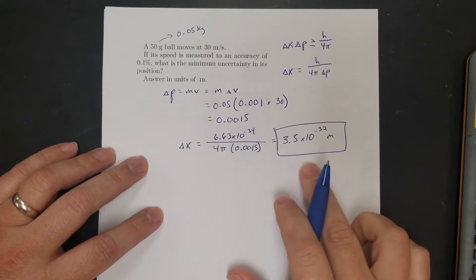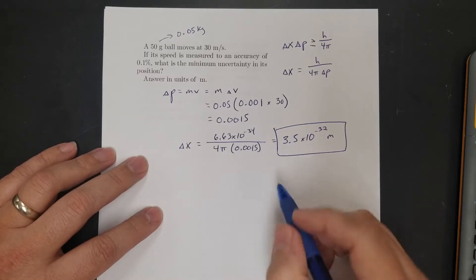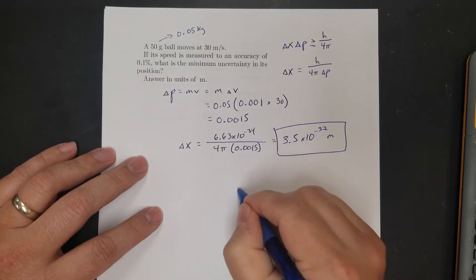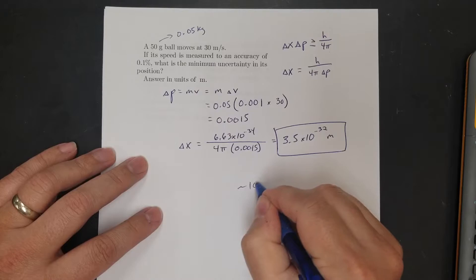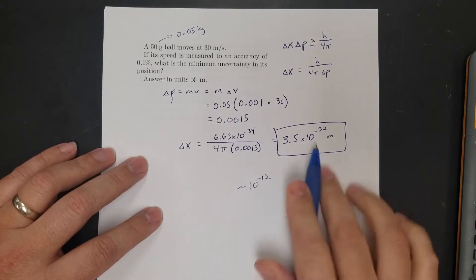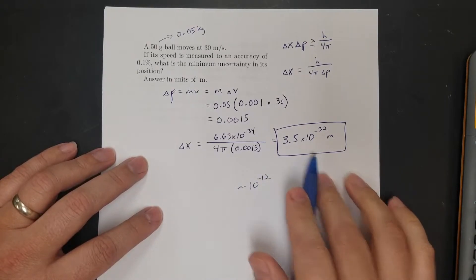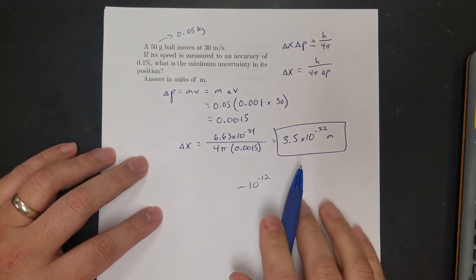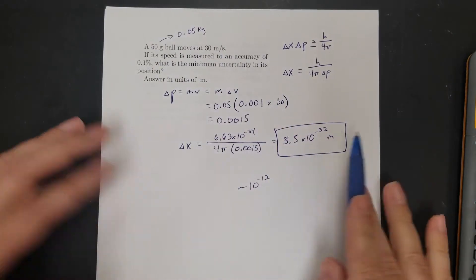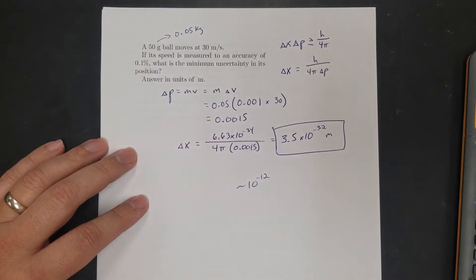That's really incredibly small. To give you an idea, the width of an atom is on the order of about 10⁻¹² meters — this is 10⁻³², really tiny. When you're talking about wavelengths for big macro-scale things, these don't mean anything. There's no meaningful uncertainty in a 50-gram ball.